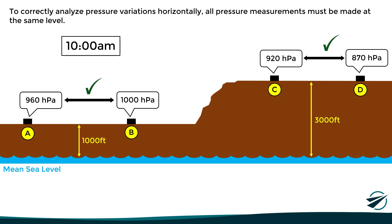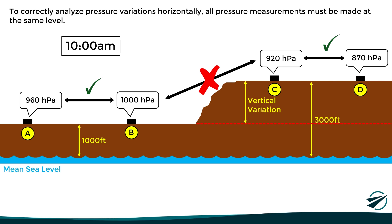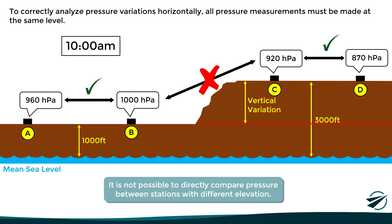Now, the problem arises if we try to compare, for example, the pressure of stations B and C, because there is not only a horizontal variation, but also a vertical variation, since they are not at the same level. For this reason, it is just not possible to directly compare pressure between stations with different elevations. So, having understood this, here is where the first concept comes in.